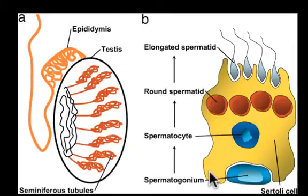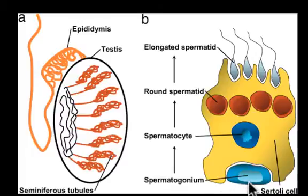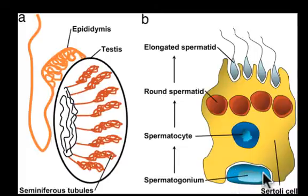Looking closely at the cells inside the seminiferous tubules, we can see how sperm are actually maturing. Normally, males at puberty start to increase testosterone production, which initiates spermatogenesis. The early sperm cell starts off as a diploid cell deep in the walls of the seminiferous tubules — called a spermatogonium. The larger yellow area, called the Sertoli cell, is a supporting cell.